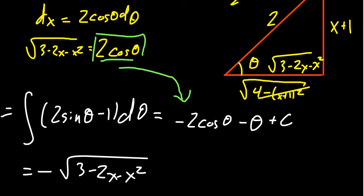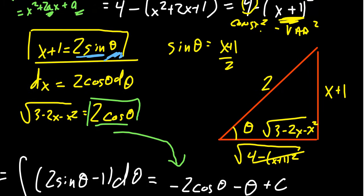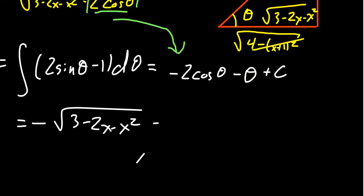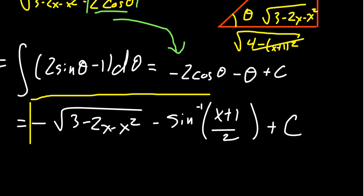But then we have this negative theta we have to deal with. And as we've seen many times, we can work by this using the original substitution, which was in our box right here. So we saw earlier that sine theta equals x plus 1 over 2. So take arcsine of that. So we're going to get arcsine of x plus 1 over 2. And then throw in your arbitrary constant. And that gives us the anti-derivative we find right here.